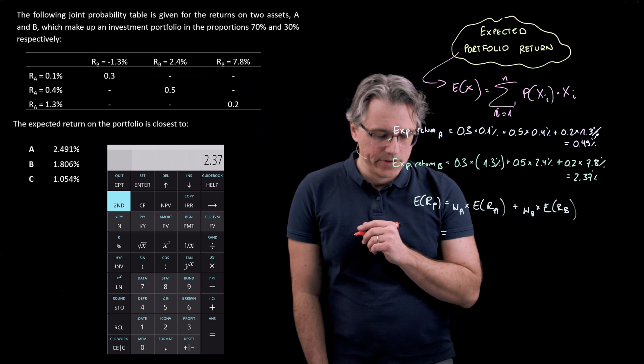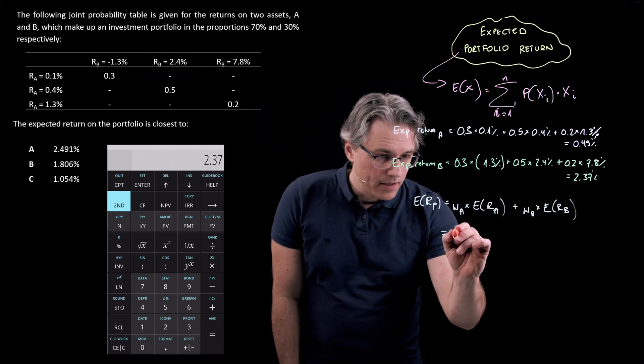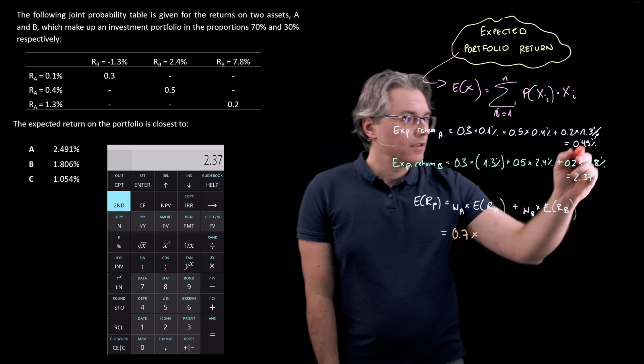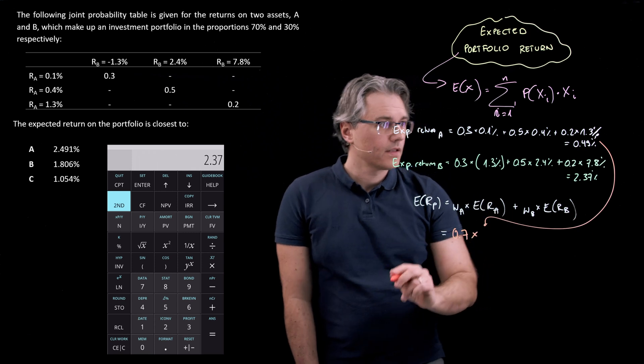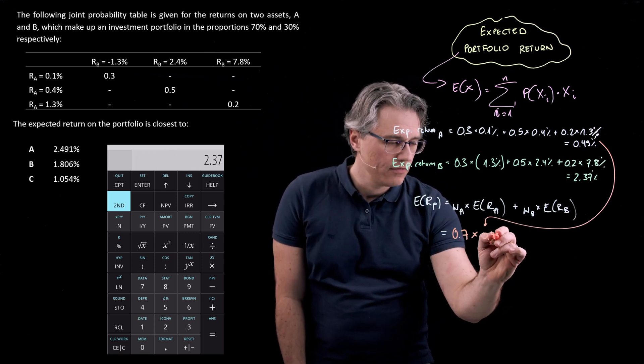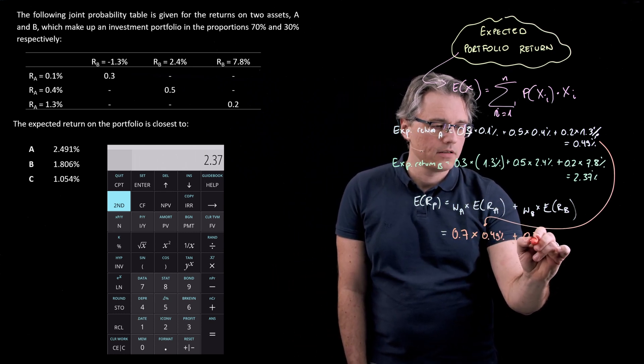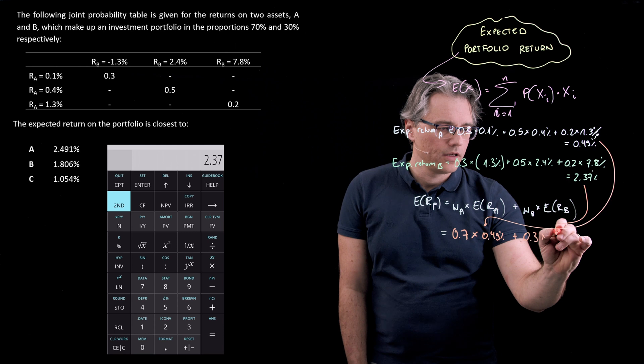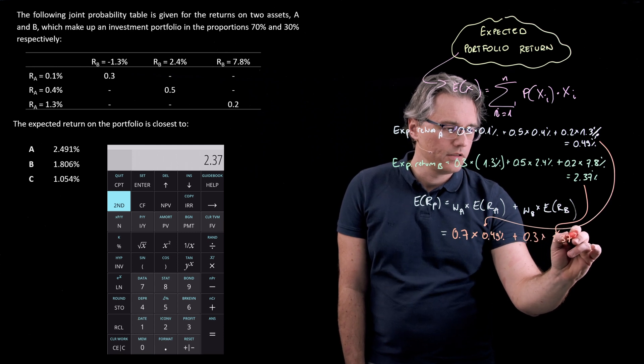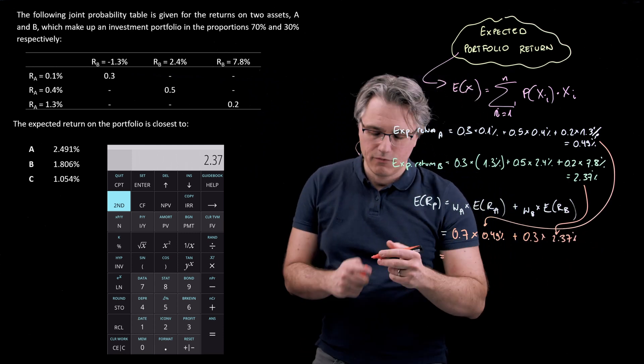The weight of A, we are told, is 70%. So 0.7 times this result, 0.49%, and the weight of B, 30%, times over here, 2.37%.